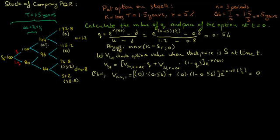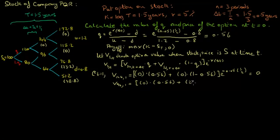Similarly, in one year's time when the stock price is 96, the option value equals 0 times the risk-neutral probability of going up, plus 23.2 times the risk-neutral probability of going down, discounted at 5% over half a year. This equals 9.96.